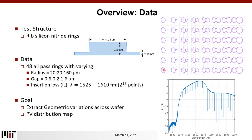We fabricated a total of 48 rings with different radii varying from 20 to 160 microns, and the varying gap from 0.6 to 1.6 microns. For each one of these 48 rings, the transmission is measured across the wavelength of interest. The goal of this test structure is to extract the geometric variations across the wafer, which can be used to know the process variation distribution map.